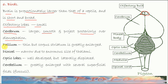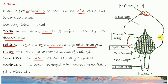The pallium is thin but the corpus striatum is greatly enlarged. Pallium is found in the cerebral hemisphere or cerebrum, and here lies the corpus striatum. The diencephalon is narrowed due to the enormous size of the thalamus. The optic lobes are well developed because eyesight is greater in birds, but they are laterally displaced. The cerebrum is greatly enlarged with several superficial folds, which are called fissures.